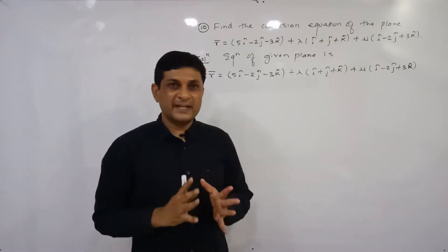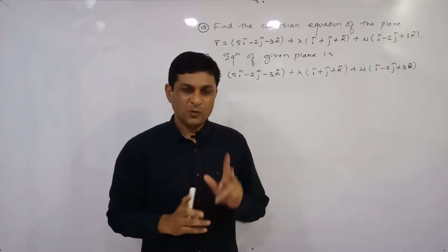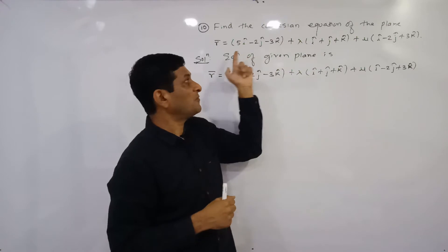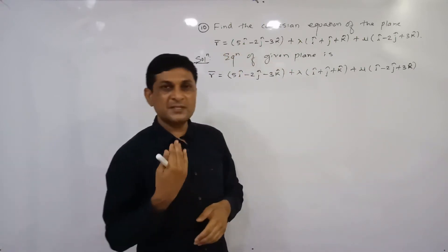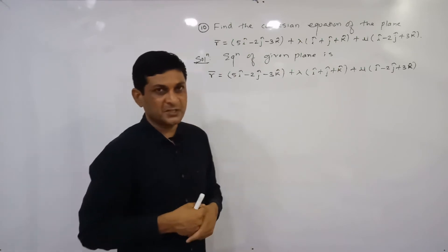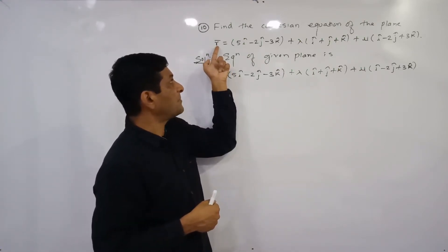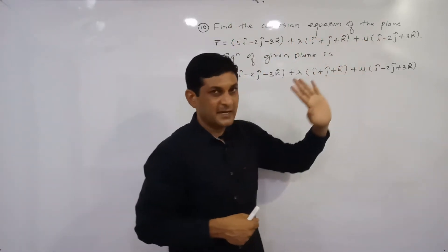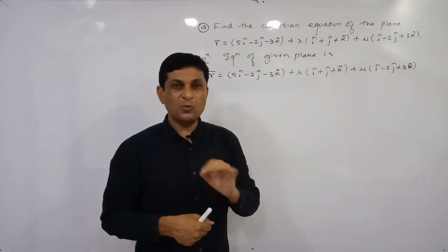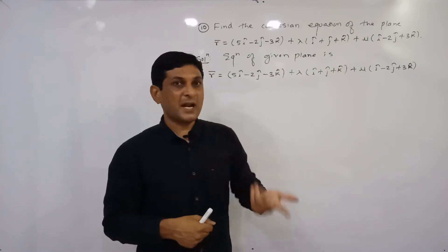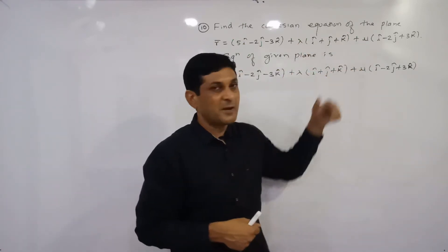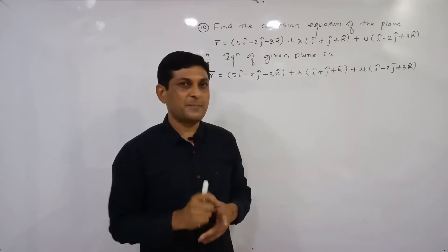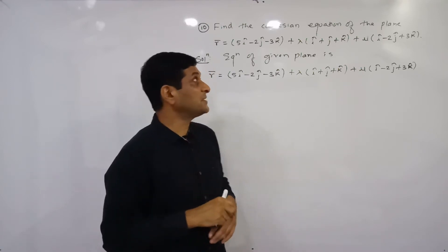We are solving example number 10 from exercise 6.3. In this example, we have to find the Cartesian equation of a plane when the equation of the plane is given. We simply have to convert this equation into a Cartesian equation. The given equation is in the form r̄ = ā + λb̄ + μc̄, which is the parametric form of a plane, with parameters denoted by λ and μ.